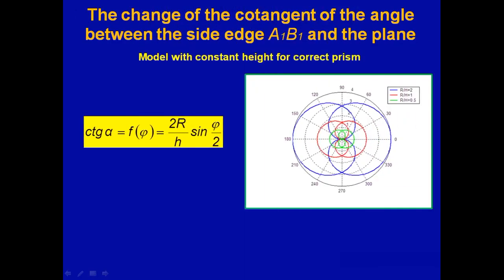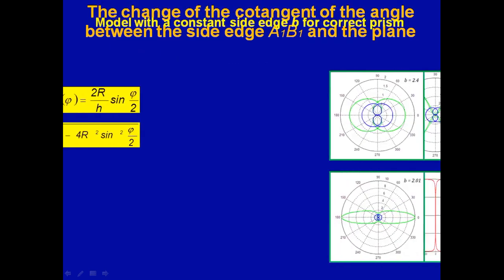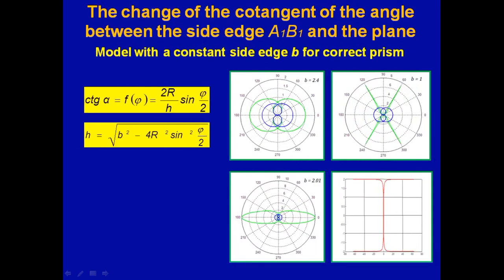We also proved that the cotangent of the angle between the side edge and the base for the model with the constant height satisfies the equation of Guido-Grande roses. And for the model with the constant length of the side edge, the cotangent satisfies the equation of different Guido-Grande rose.